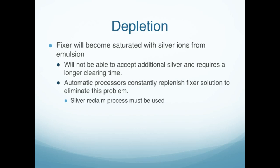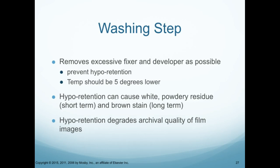In depleting the fixer, the fixer will become saturated with silver ions from the emulsion. This will not be able to accept additional silver and requires a longer clearing time. Automatic processors constantly replenish their fixer solution to eliminate this problem, and the silver reclaim process must be used. The washing step removes excessive fixer and developer and prevents hyporetention. Temperature should be 5 degrees lower. Hyporetention can cause white powdery residue short-term and brown stain long-term, and degrades archival quality of the film images.